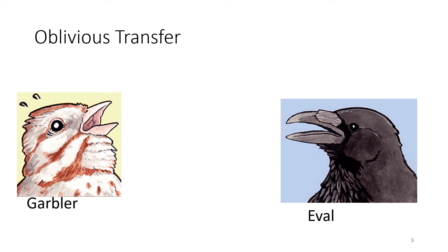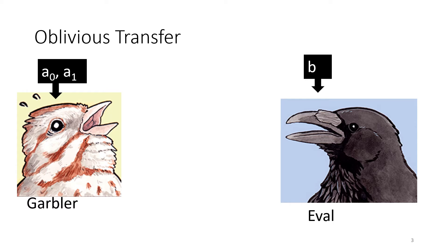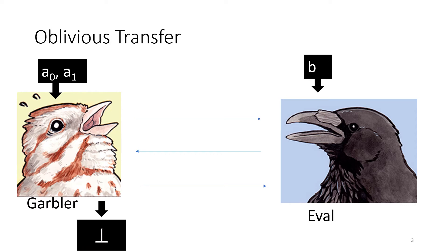Usually garbled circuits are run on boolean circuits, so the input that the evaluator has is actually a bit. Since he needs to evaluate in an oblivious manner, he needs to somehow receive the appropriate garbled value for his input. The way this works is the garbler picks two random values representing bit 0 and bit 1, and the evaluator has his bit. They run a protocol for oblivious transfer, and at the end the garbler learns nothing and the evaluator learns the appropriate value associated to his bit. With this value and the garbled circuit, he can evaluate and get a garbled output which can then be decoded.